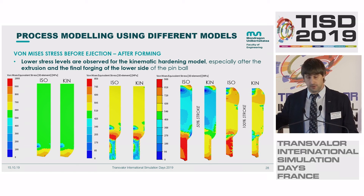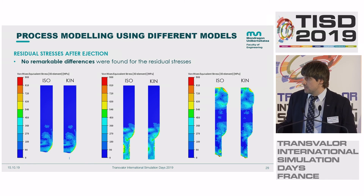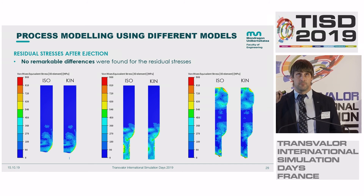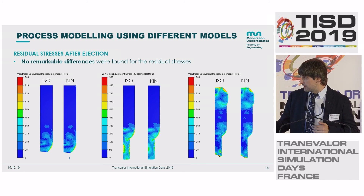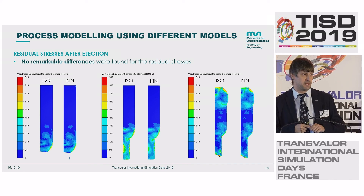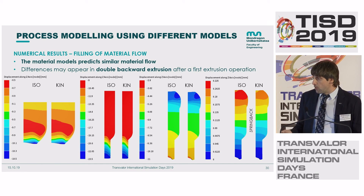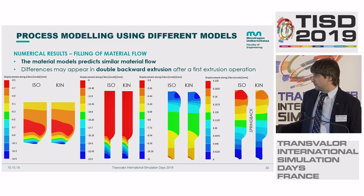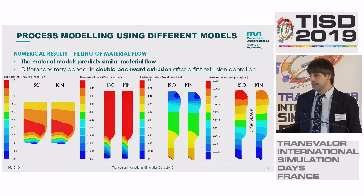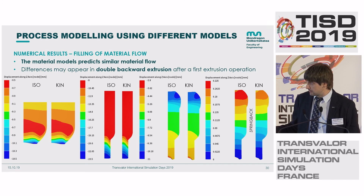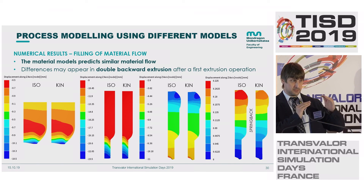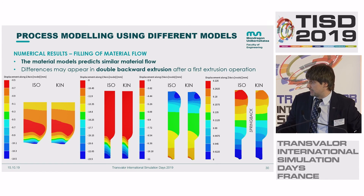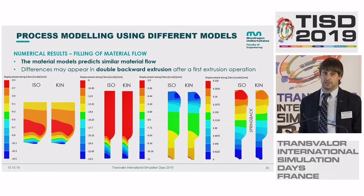Regarding residual stresses, there are no remarkable differences, but be careful if using this for virtual bolt testing because applying tension afterward could have a big influence on the final result. Regarding flow, there is no real difference in the closed die, but there are small differences after springback — particularly if the backward extrusion is large, differences between upsetting and backward extrusion could influence your process.